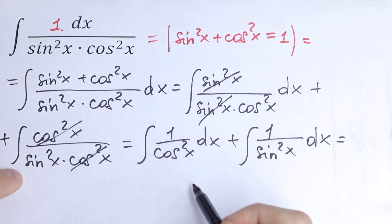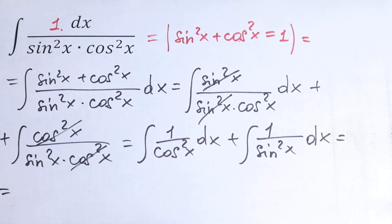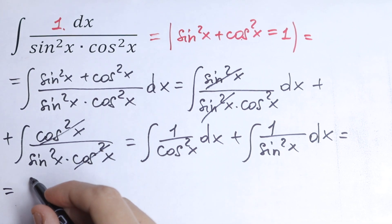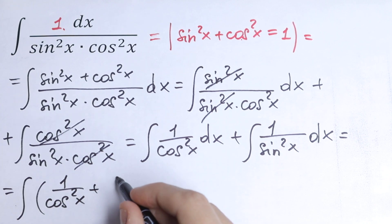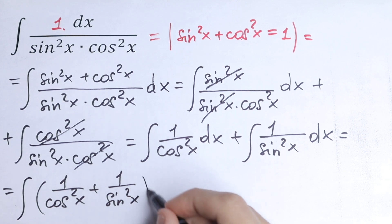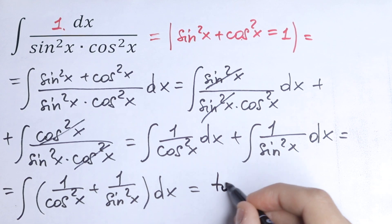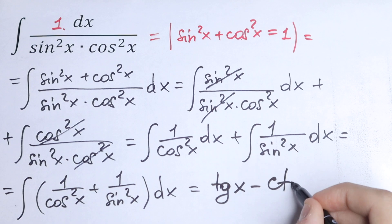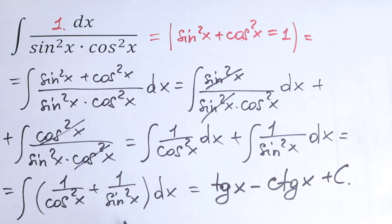This is our table case. We can write this as the integral of 1 over cosine squared x plus 1 over sine squared x, dx. We can calculate this integral directly: the result is tangent x minus cotangent x plus C. This will be our answer.